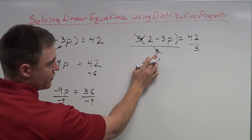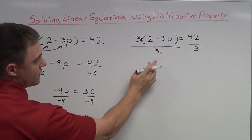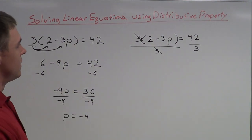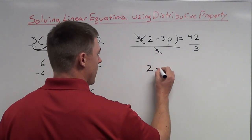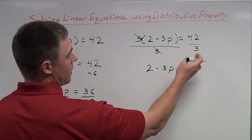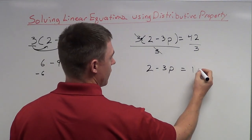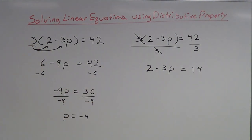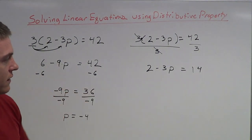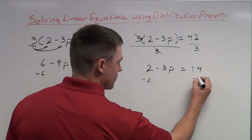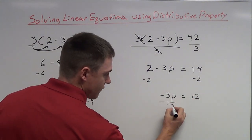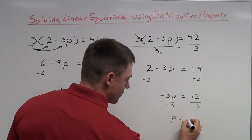The 3's cancel — this 3 cancels right outside the parenthesis without affecting what's inside. I'm left with 2 minus 3p equals 14, since 42 divided by 3 is 14. I don't need parentheses anymore because there are no numbers out front. Same deal: I want to get rid of the 2 first, then the negative 3. Subtract 2 from both sides: negative 3p equals 12. Then divide by negative 3, and p equals negative 4.